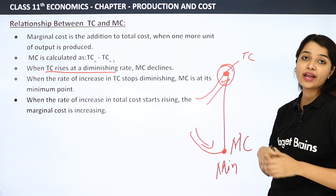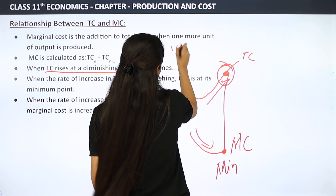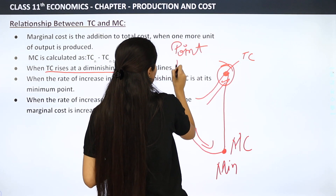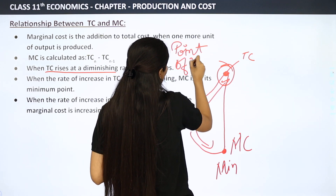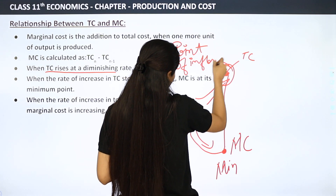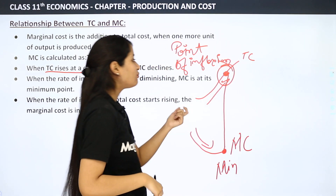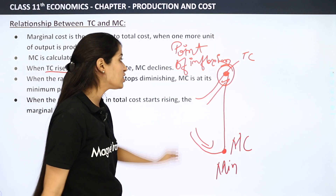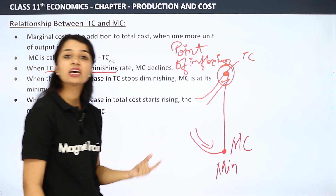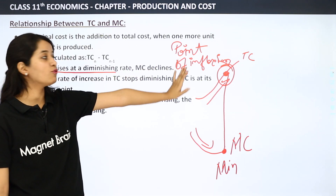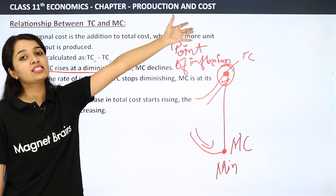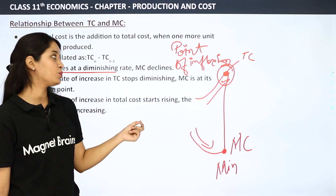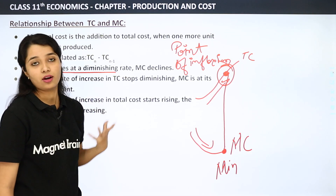And what do we call this point? We call it the point of inflection. When we studied total cost and marginal cost, there is a thing called point of inflection. What is the point of inflection? When your TC changes its rate — it was increasing at a diminishing rate, now it changes and starts increasing at an increasing rate — that point is called the point of inflection.